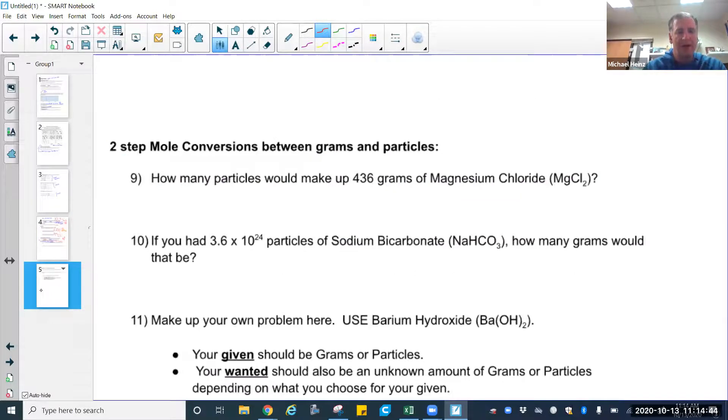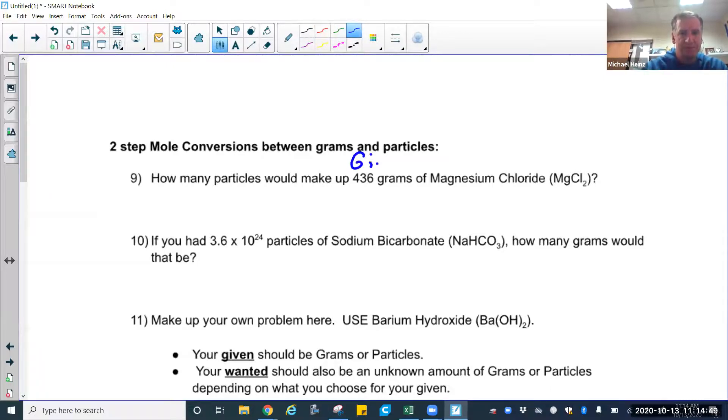So in number nine, my given is grams of magnesium chloride, but now my wanted isn't moles. I'm going to go through moles and I got to get the particles. So if you think of the mole map with the mole in the middle and then grams down here - in this case, you're going from grams to moles. That's one step. Once you get to moles, then you change it into particles. And so this is really a two-step process of changing grams to moles.